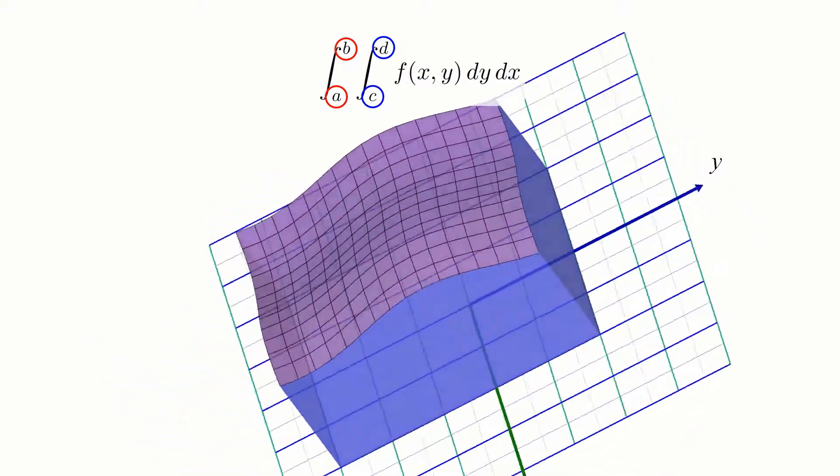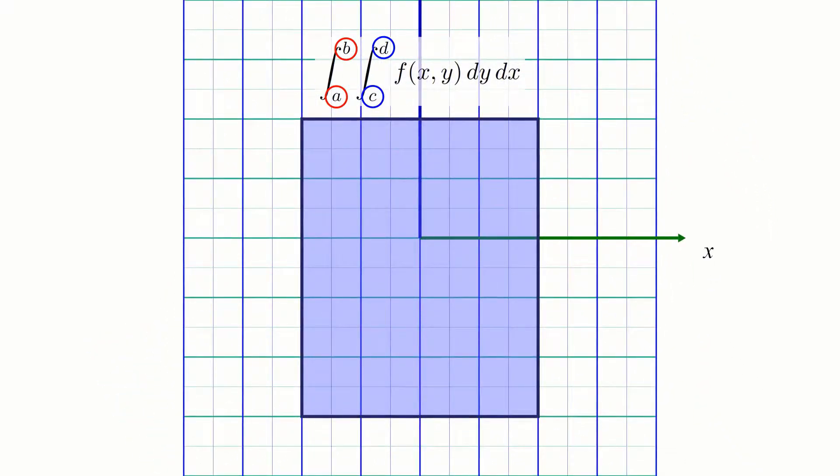For example, if the inner integral is a y-integral like it is here, the bounds indicate what portion of the y-axis should be swept to produce a slice. In this case, any given y-slice should be swept starting from y equals negative 3 and ending at y equals 2.